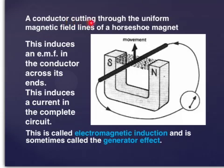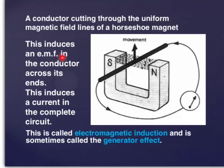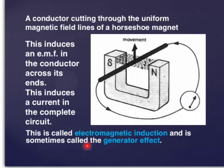A conductor cutting through the uniform magnetic field lines of a horseshoe magnet — that's a horseshoe magnet with a uniform field going from north to south — and this conductor is cutting through these field lines. This induces an EMF in the conductor across its two ends, and induces a current in the complete circuit. So if you complete the circuit of this conductor, there will be current flowing. This is called electromagnetic induction, and it's sometimes called the generator effect.